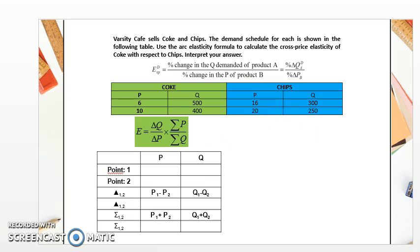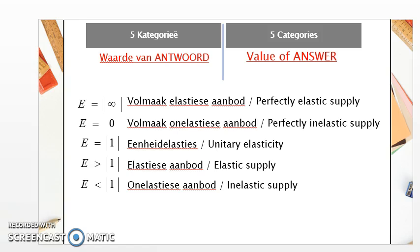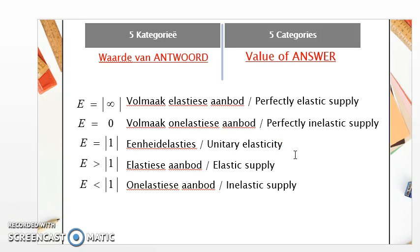The last elasticity is price elasticity of supply. It is similar to price elasticity of demand, with the key difference being that the elasticity value will always be positive. The same five categories apply, similar to those used for elasticity of demand.